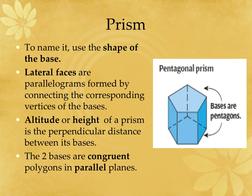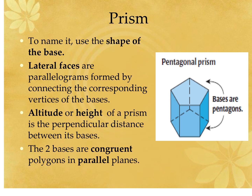When we go to name a prism, we use the shape of the base. Prisms aren't always sitting on their bases — sometimes they're sitting on a side. What you look for is the shape that you have two of. Notice I've got a pentagon on the top and on the bottom, so this is a pentagonal prism. The lateral faces, or the sides, are all parallelograms — they look like rectangles, but technically a rectangle is a parallelogram. The lateral faces connect the vertices of the bases.